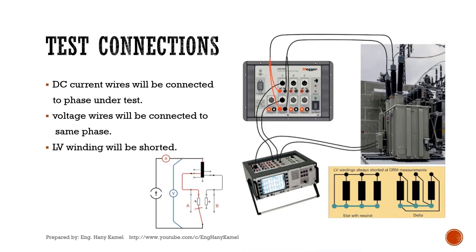Test connections: DC current wires will be connected to the phase under test, voltage wires will be connected to the same phase, and the LV winding will be shorted.